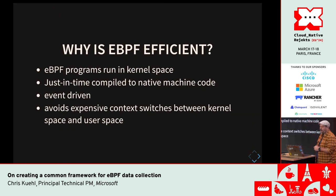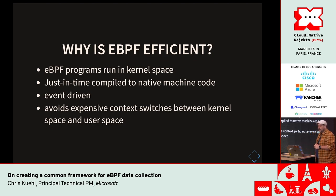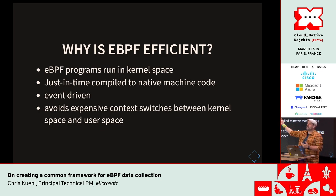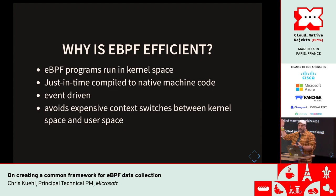Why is eBPF efficient? eBPF programs run in kernel space, are just-in-time compiled to native machine code — meaning they're as fast as the kernel itself. They're event-driven, so they don't run all the time, only when things happen. This avoids expensive context switches between kernel space and user space. For data collection specifically, we can do filtering inside the kernel, limiting how much data we send up to user space, making it far more efficient.